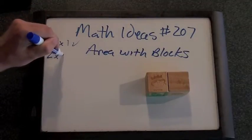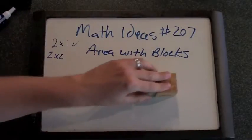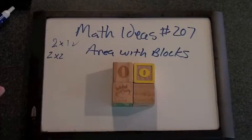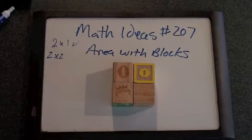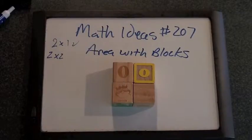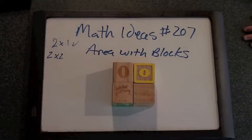Why don't you make a two by two square for me? What's the area of that? It's four. How did you figure that out? Because one plus one plus one plus one, or two plus two. All of that equals four.